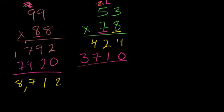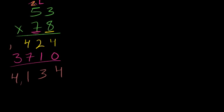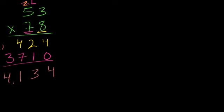Now we're ready to add. 4 plus 0 is 4. 2 plus 1 is 3. 4 plus 7 is 11, carry the 1. 1 plus 3 is 4. 4,134. Let's up the stakes a little bit.